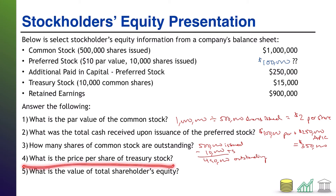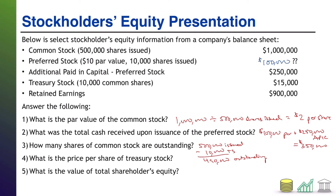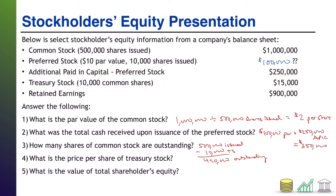Next up: what is the price per share of treasury stock? When you buy back treasury stock from investors, you reset the par value at whatever you paid for it. So even though these are common shares previously at $2 par, they are now at whatever we paid to obtain them from the market. We paid $15,000 to get 10,000 shares. Therefore, $15,000 divided by 10,000 treasury shares means we paid $1.50 per share, and that is the new par value of that treasury stock.